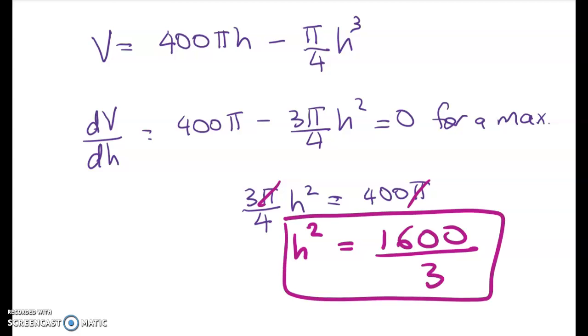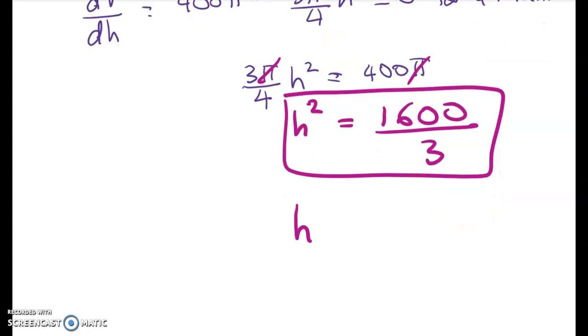Okay, so we've found my height. We'll take the square root of that. So H is equal to 40 on root 3. Now we know that we need the positive value there so we can ignore the negative root. I mean the negative square root.